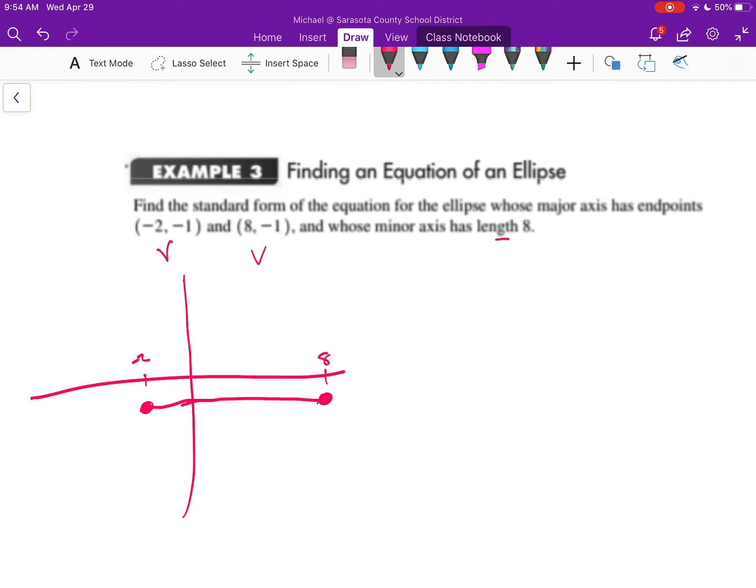And then it says whose minor axis has a length of 8. Well, let's think about first and foremost what the distance from negative 2 to 8 is. The distance from negative 2 to 8 is a total of 10. That means halfway in between, we will find the center of this ellipse. And so I'm going to go 5 to the left or 5 to the right, depending on where I start from one of these vertices.